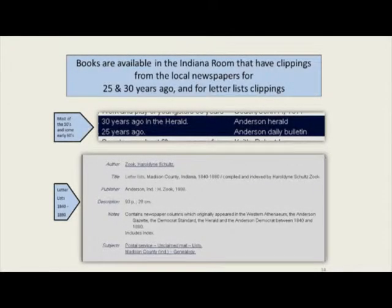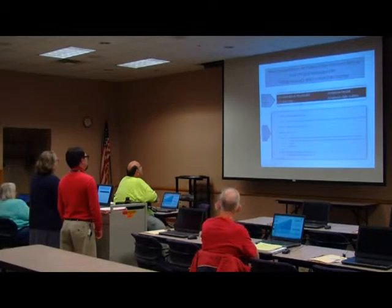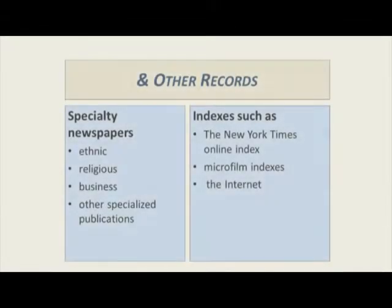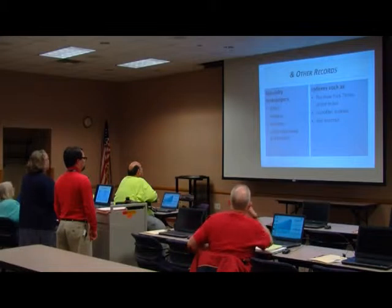The "remember when" section — sometimes 10 to 50 years ago — you see those in almost any paper today. Fraternal organizations, undelivered mail lists, also called letter lists. We do have a few books in our Indiana Room collection where they've taken those articles out of the paper and bound them into books. There's also a book of letter lists from 1840 to 1880. Specialty newspapers include ethnic papers, such as a Jewish newspaper or one published in German, religious newspapers, businesses, and other specialized publications.